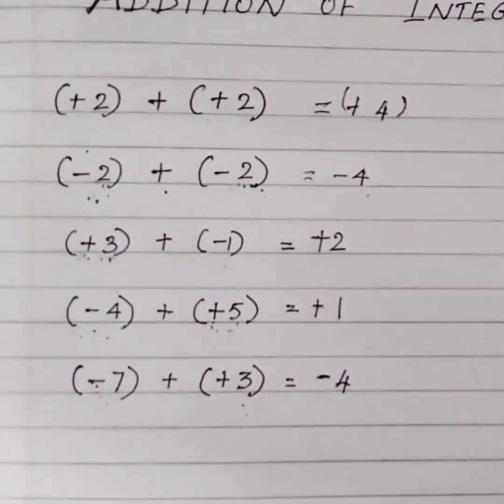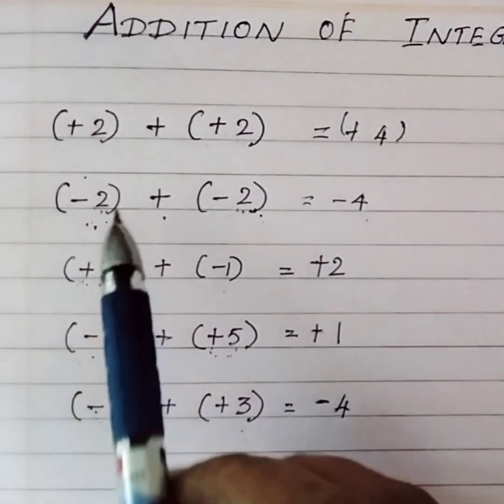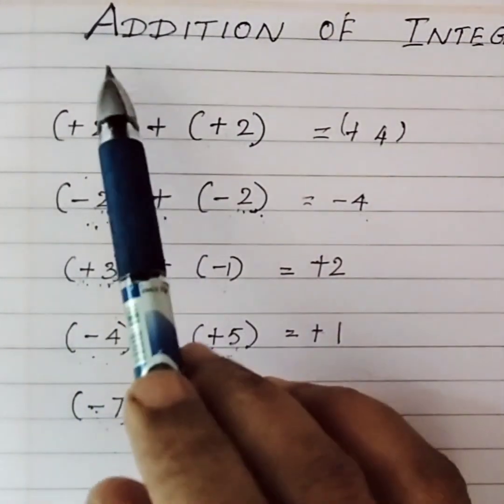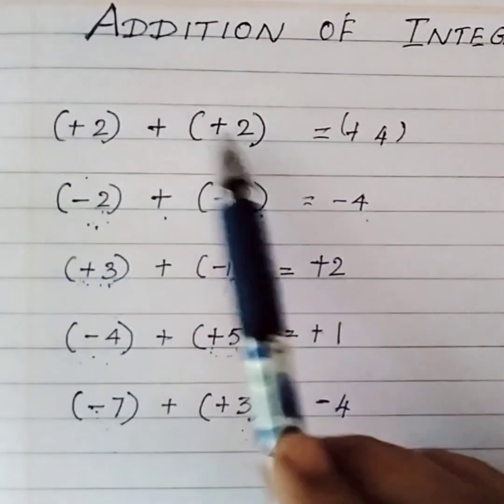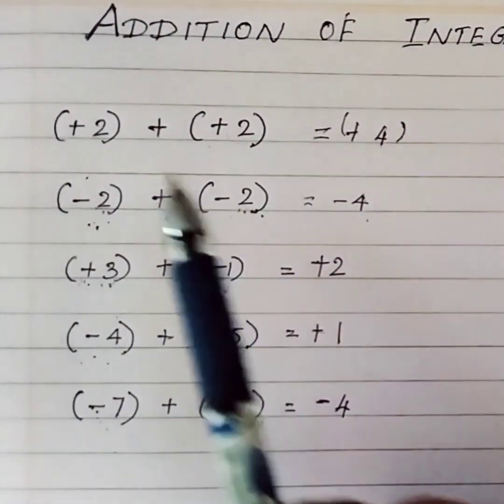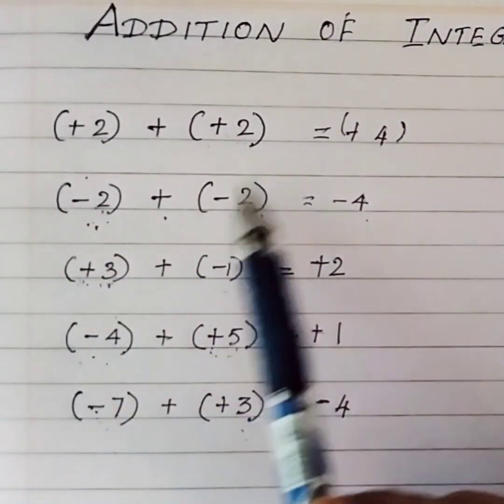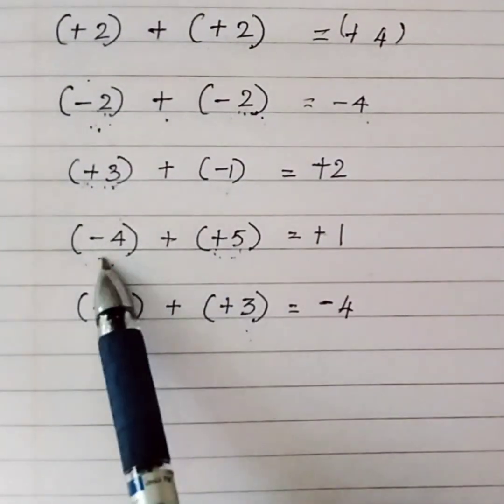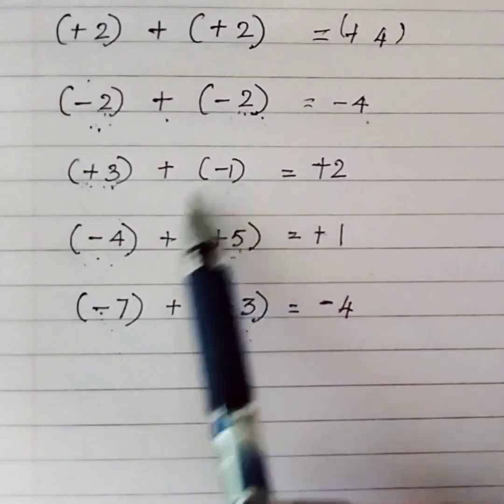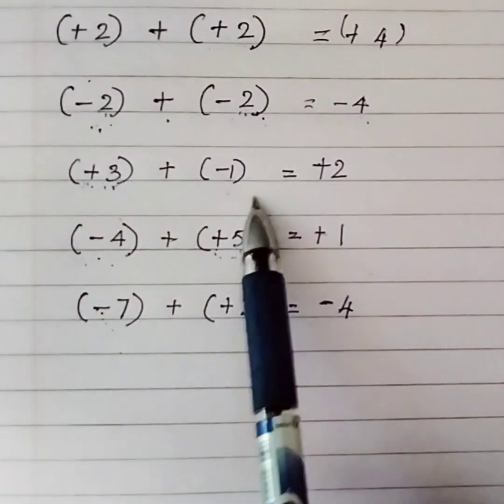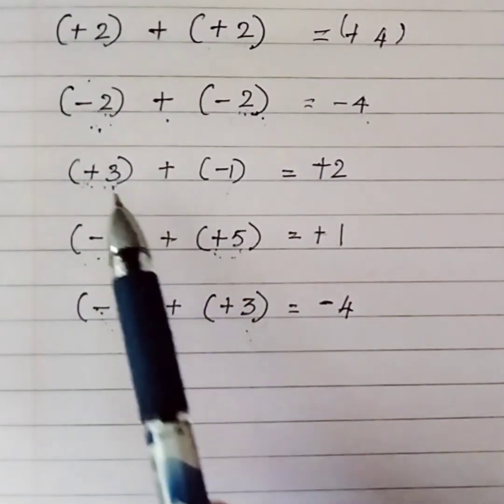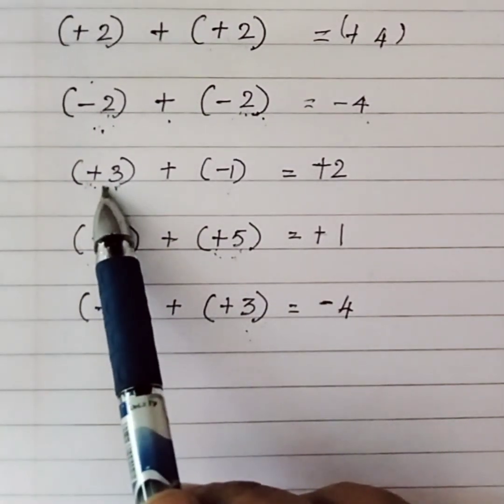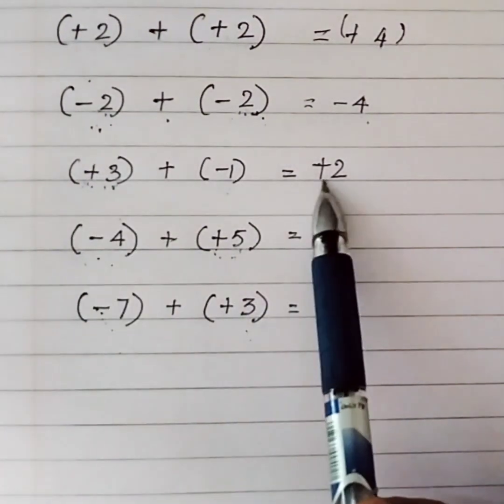Once again, I'm repeating: when you have same signs, add and place the sign. When you have different signs, subtract. Don't think of the plus sign in between—just do the subtraction and write the sign of the larger number.